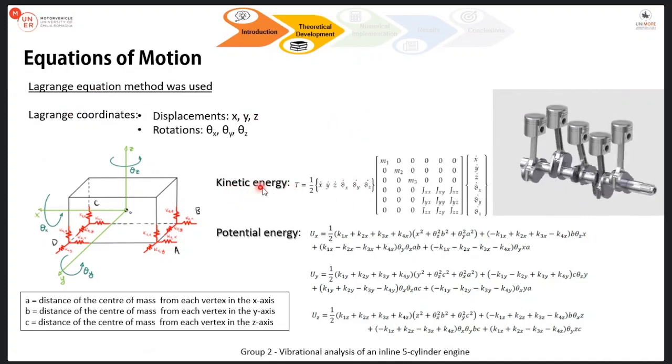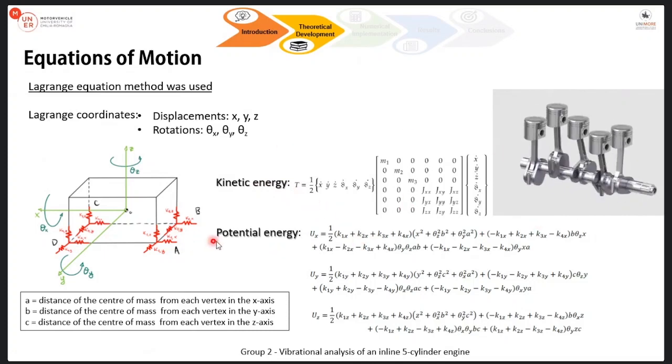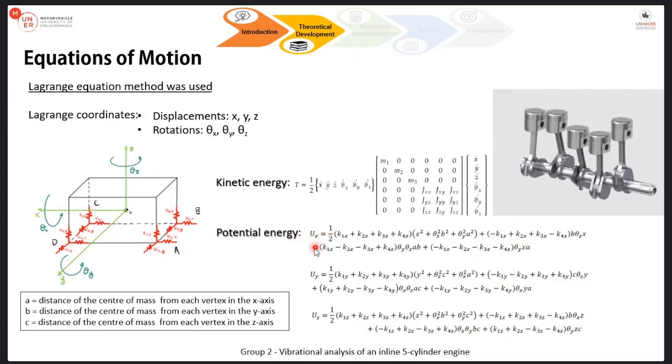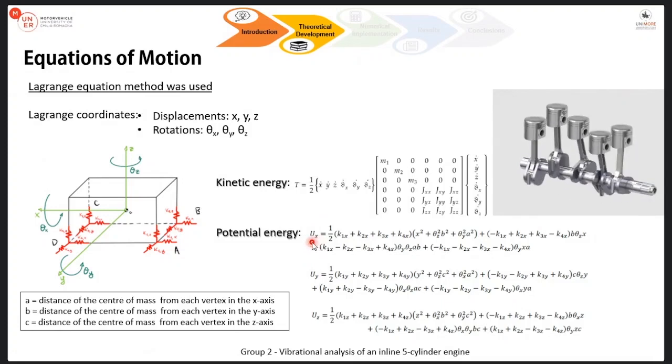Therefore, we had to calculate the kinetic energy and we did that with this formula here. We also had to calculate the potential energy and it was a very complex calculation. We did it in a slightly different way. We firstly found out the value of the x component, then the y component, then the z component and summed the three.